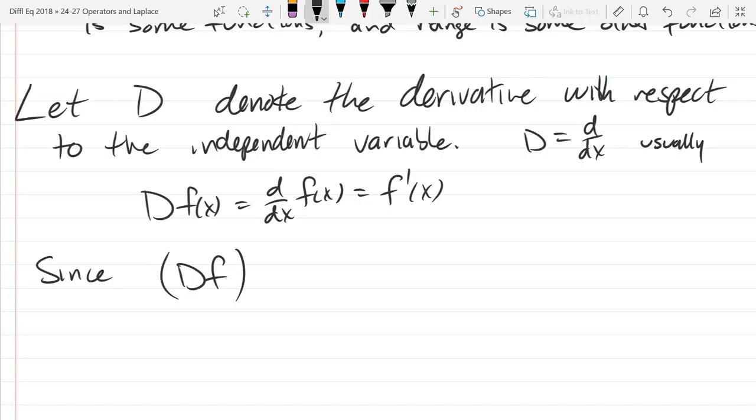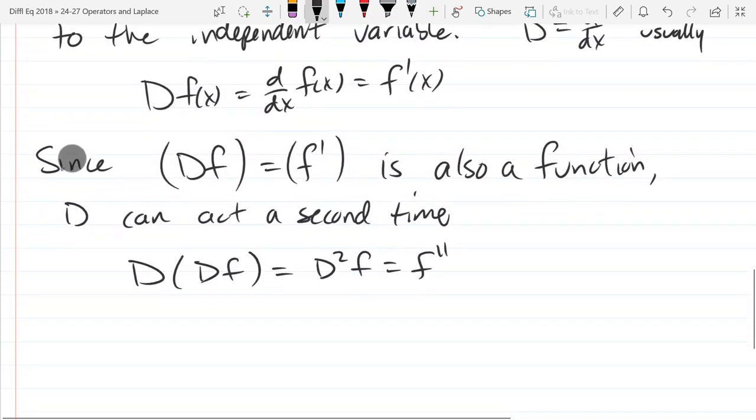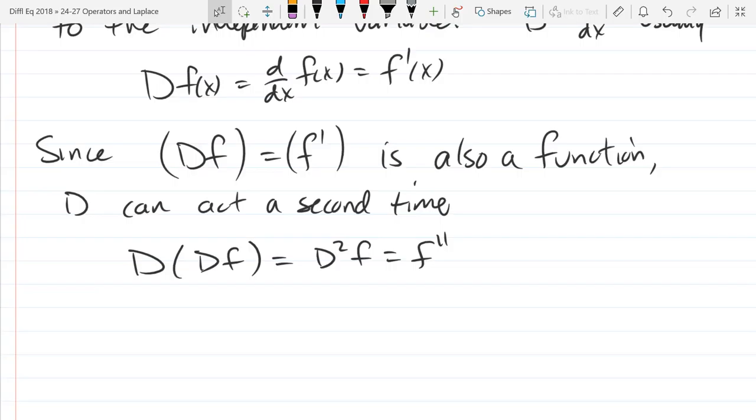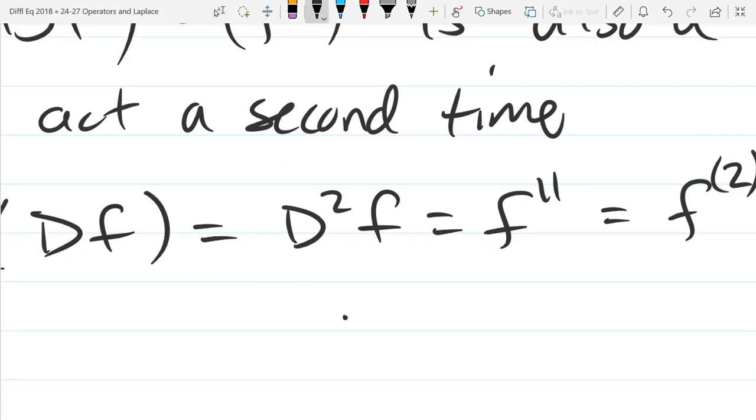Now once you take a derivative, since D f, also known as f prime, is also a function, you can let the operator D act a second time. You can do D of D f, also known as D squared f, or f double prime. This is all review stuff, just a slightly different notation. When we write exponential derivative notation, we always use a parenthesis to mean take the derivative.